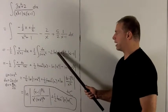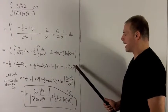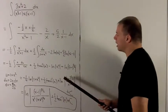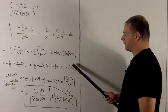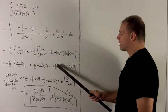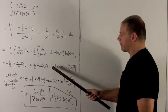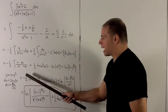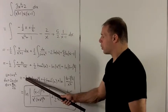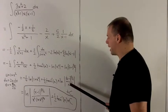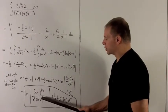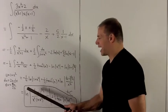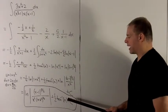We combine all the logarithm terms using log properties: coefficients move inside as exponents. So −2 ln|x| becomes ln(x²) in the denominator, (5/2) ln|x−1| becomes ln|x−1|^(5/2), and −(1/4) ln(1+x²) becomes ln(1+x²)^(1/4) in the denominator. The final answer is ln(|x−1|^(5/2) / (x²·(1+x²)^(1/4))) + (1/2) arctan(x) + C.